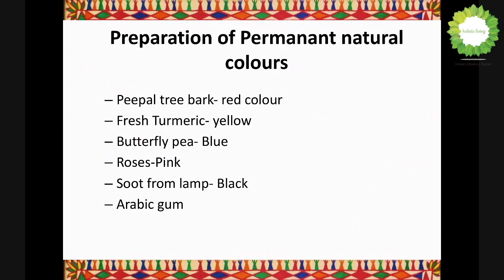To make a permanent color, use Arabic gum or any tree resin. Arabic gum looks like beeswax. Pour two to three cups of water based on the quantity needed and let it rest for half an hour. You will get a honey-like consistency. Mix this Arabic gum liquid with the pigments you have already prepared, and your permanent color is all set.